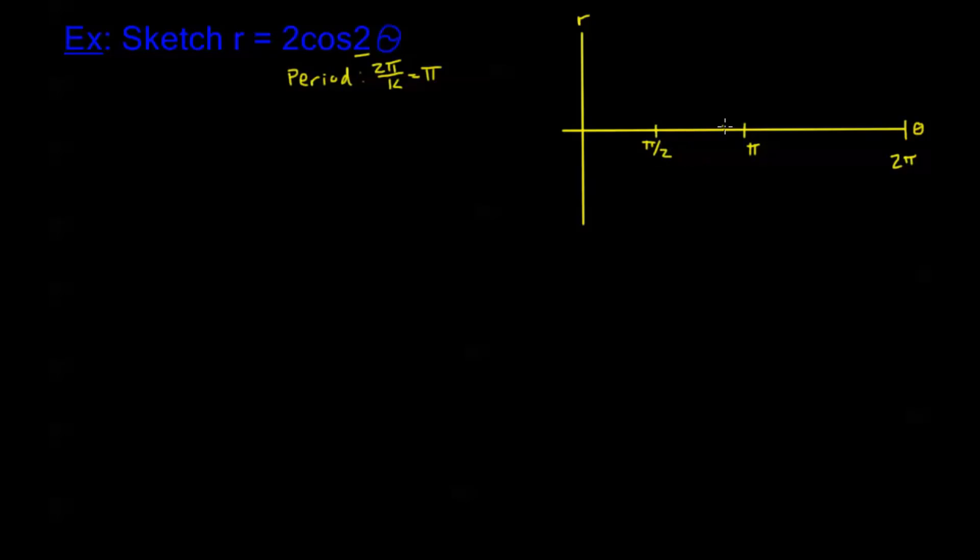So let's go ahead and draw out some of these key points. Now one period is from 0 to pi, so I'm going to need my 5 points from 0 to pi. So I'm going to have pi over 4, pi over 2, 3 pi over 4, and pi. That's one period.